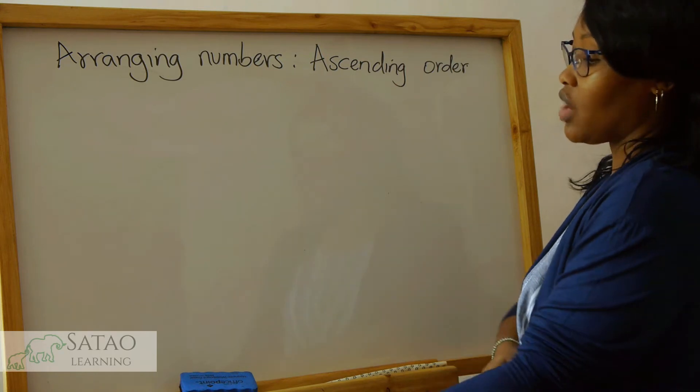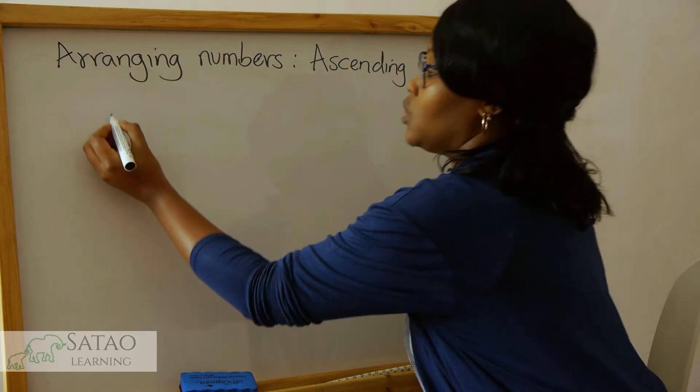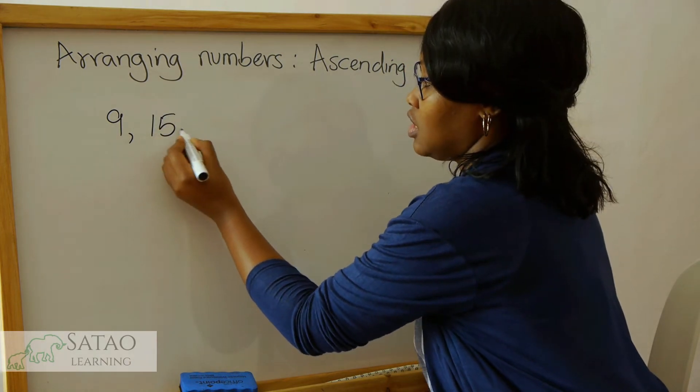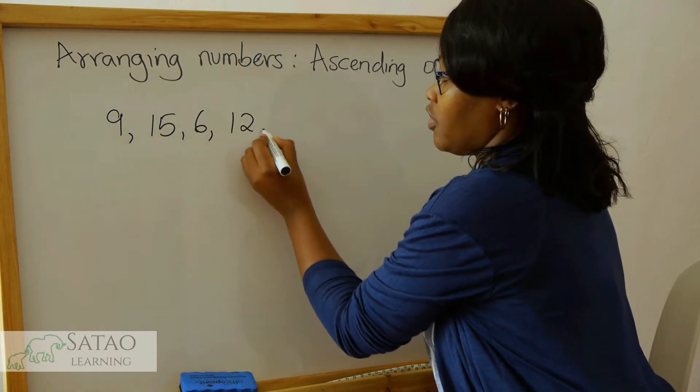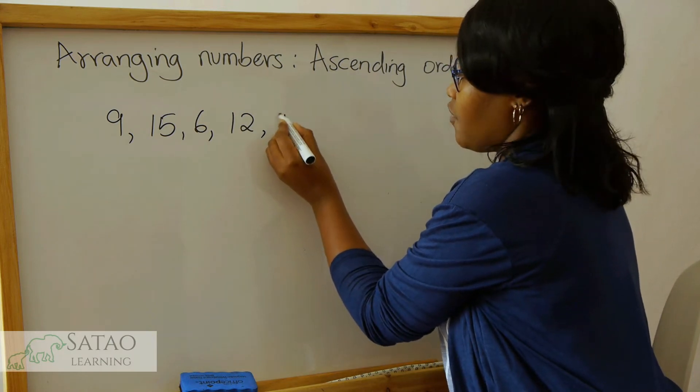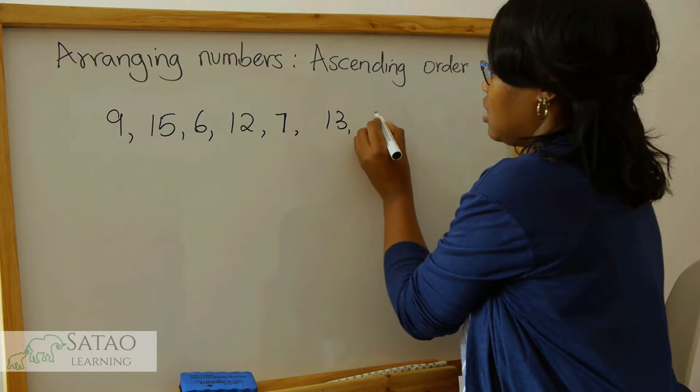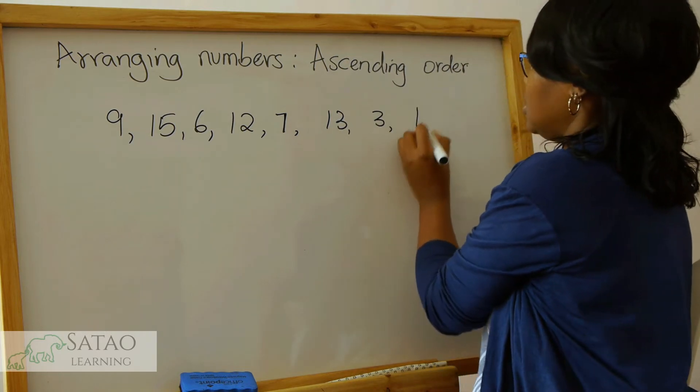So let's say we are given a group of numbers which are 9, 15, 6, 12, 7, 13, 3, and 19.